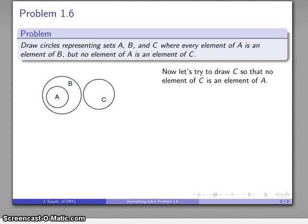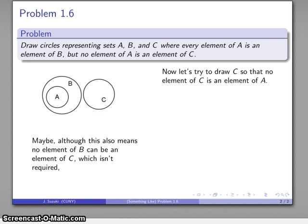Maybe I'll try to draw the circle there. Well, here no element of A can be an element of C, so that works. Except we've also added that no element of B can be an element of C, and that isn't required.